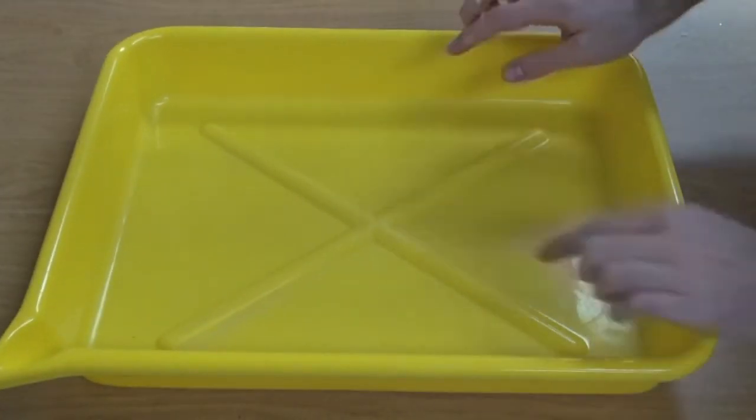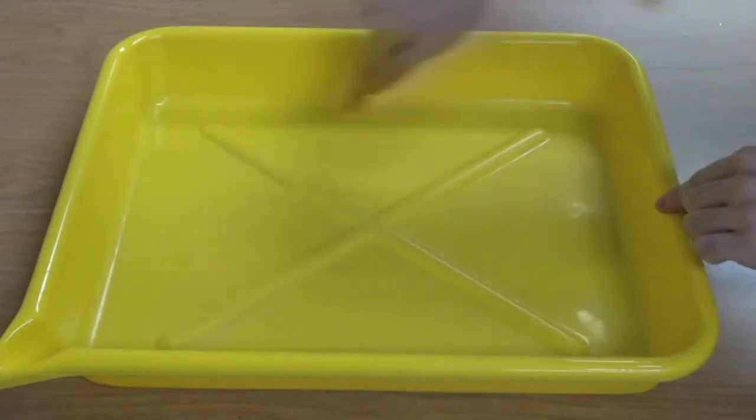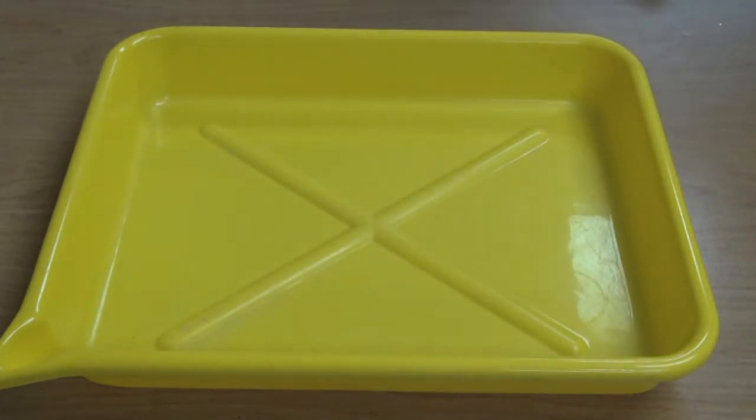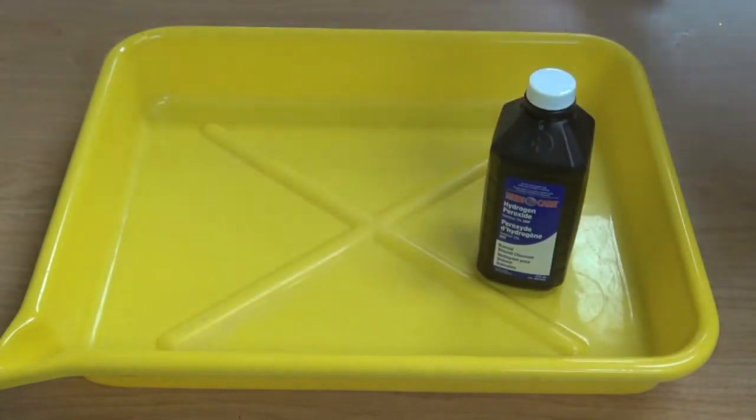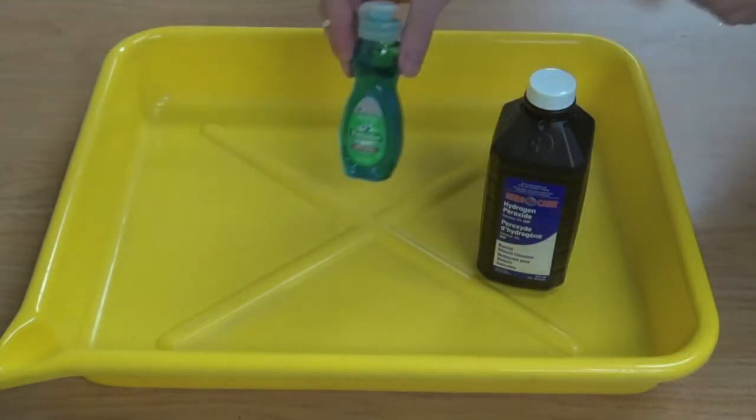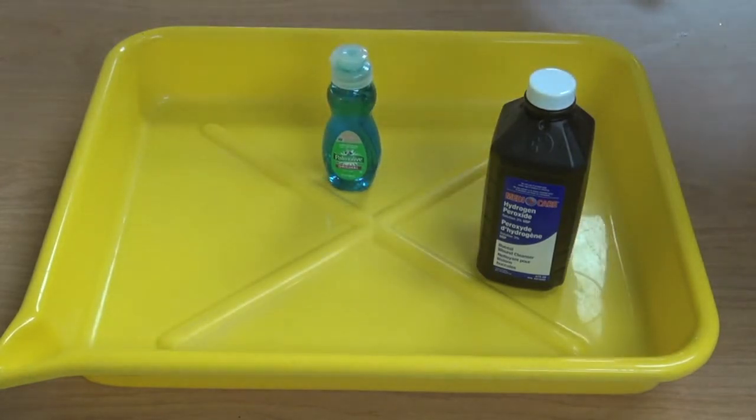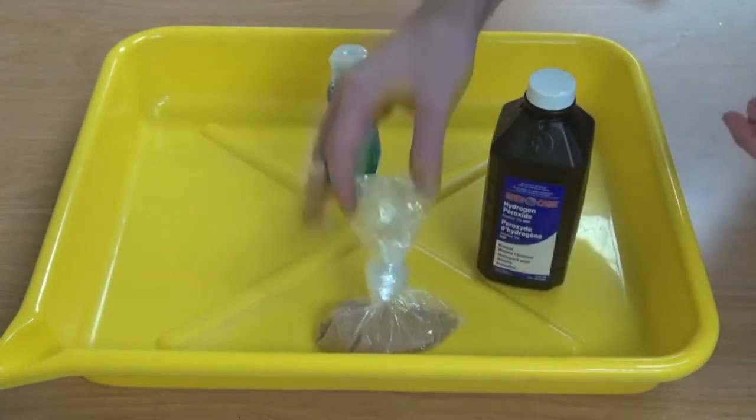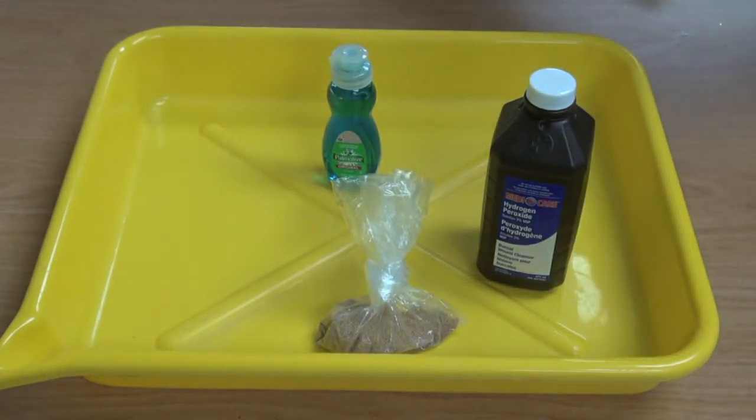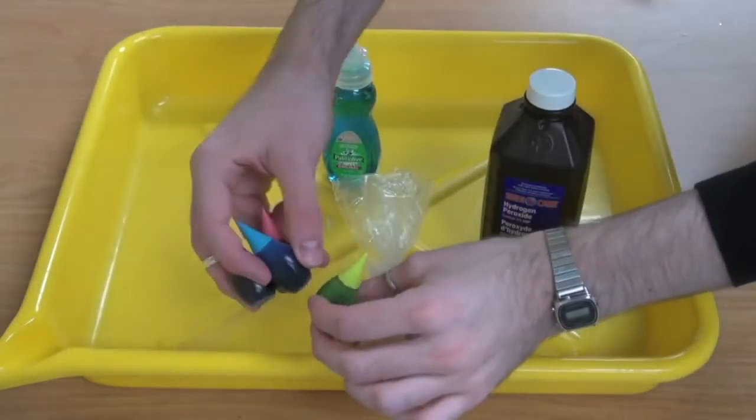For this project you will need a basin or a tray with a lip so that the spill doesn't go over the edge. You will also need 3% or 6% hydrogen peroxide, some liquid dish soap, some dry yeast, and food coloring of your choice.